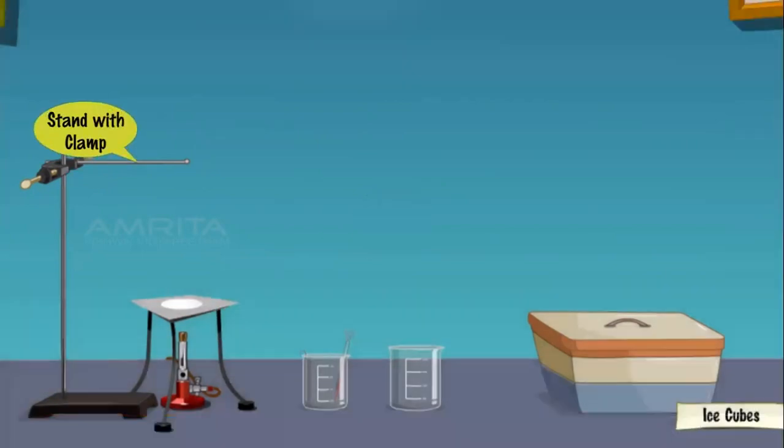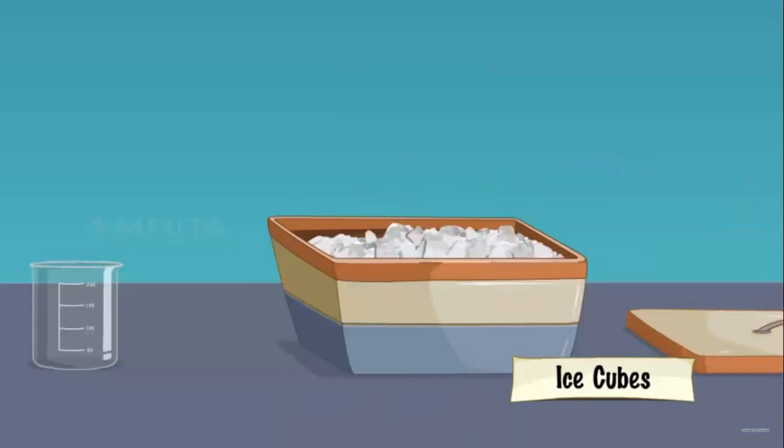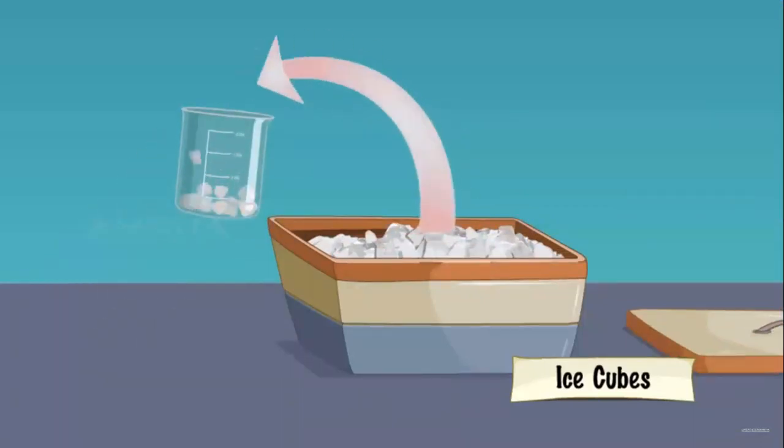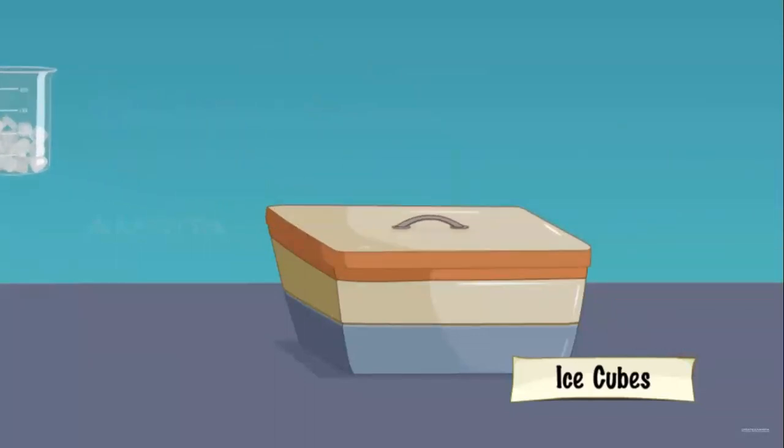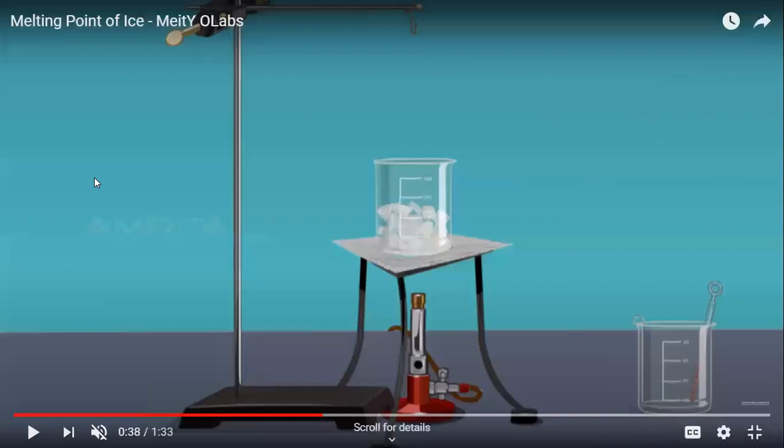Observe. Now what we are going to do, we are going to take small amount of ice cubes in the beaker and then we are going to place it on the wire gauze. So observe the first step, we have collected the ice cube in the beaker and we are going to place it on the wire gauze or you can place it on the tripod stand containing the wire gauze. Now you can observe further.